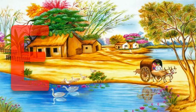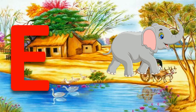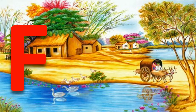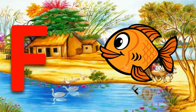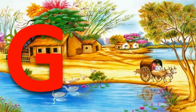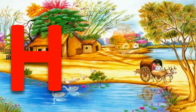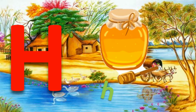E for Eggplant. F for Fish. G for Goat. H for Honey.